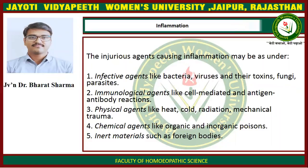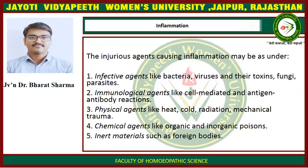The injurious agents causing inflammation may be as follows. First is infectious agents like bacteria, viruses and their toxins, fungi and parasites. Second is immunological agents like cell-mediated and antigen-antibody reactions. Third is physical agents like heat, cold, radiation, and mechanical trauma. Fourth is chemical agents like organic and inorganic poisons, and inert materials such as foreign bodies.